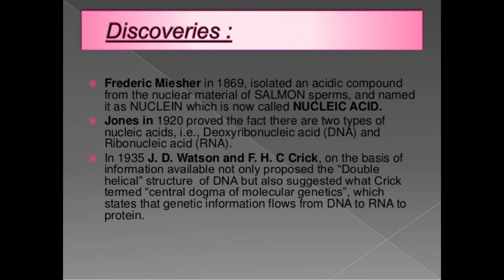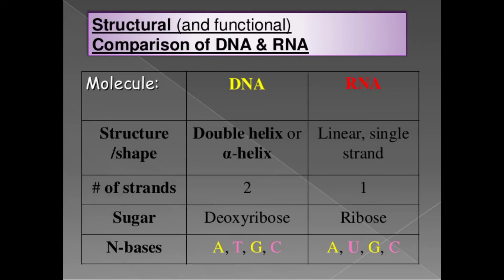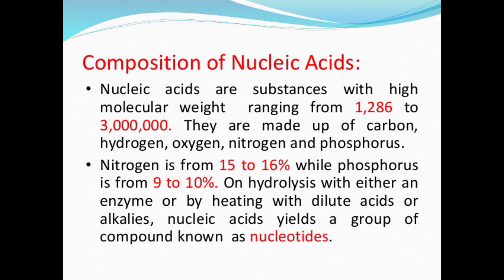Structural and functional comparison of DNA and RNA: DNA has a double helical (alpha helix) structure with two strands, while RNA is single-stranded and linear. DNA contains deoxyribose sugar; RNA contains ribose sugar. In terms of nitrogenous bases, DNA contains adenine, thymine, guanine, and cytosine, while RNA contains adenine, uracil, guanine, and cytosine.